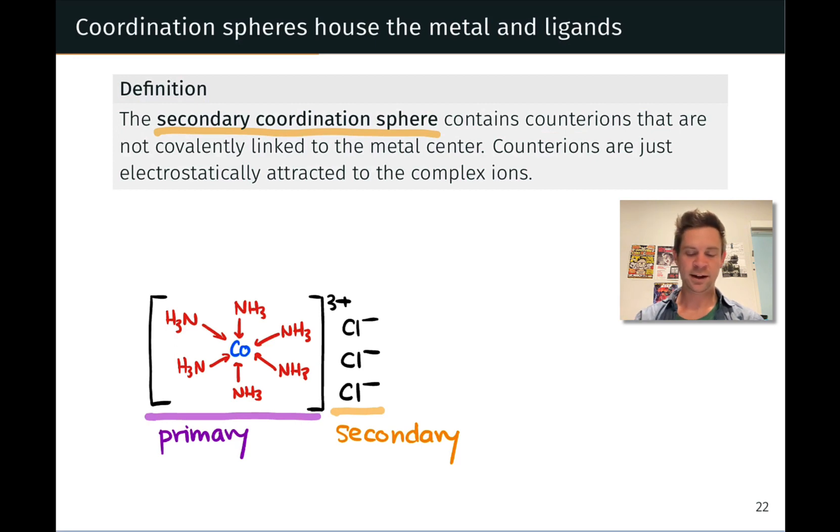In fact, we can think of these ions in the secondary coordination sphere as essentially involved in ionic bonding with the complex ion itself. So there's an ionic bond between this entire three-plus cation and the chloride anion, for example. Counter-ions are just electrostatically attracted to the complex ions.